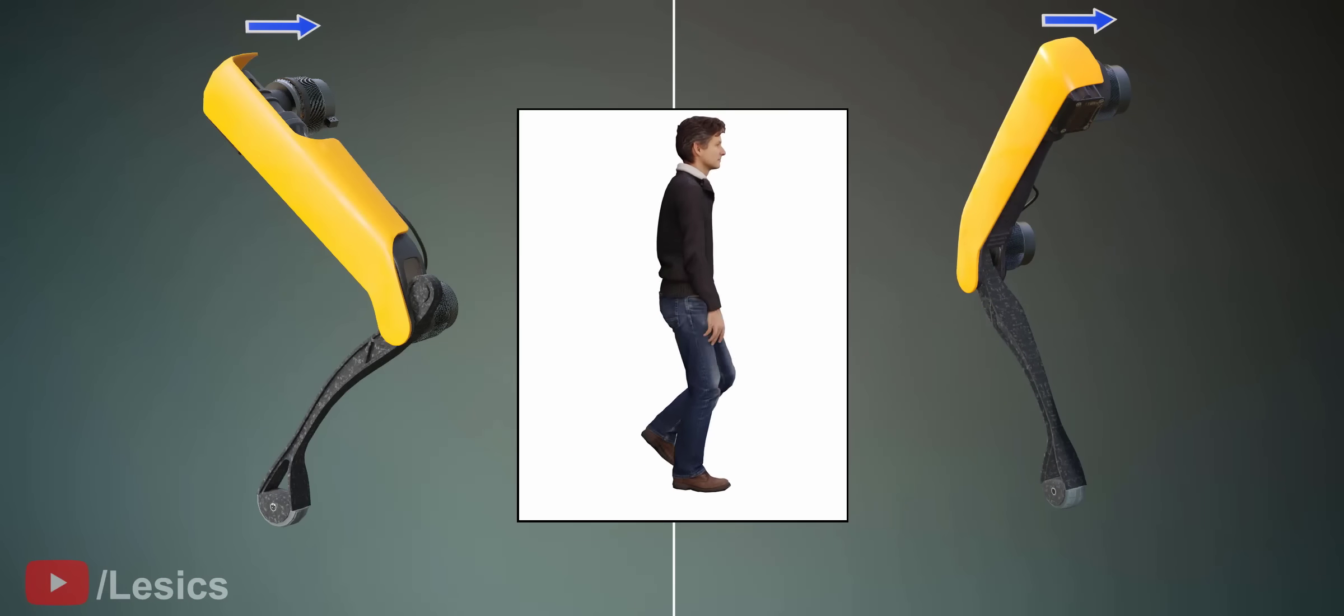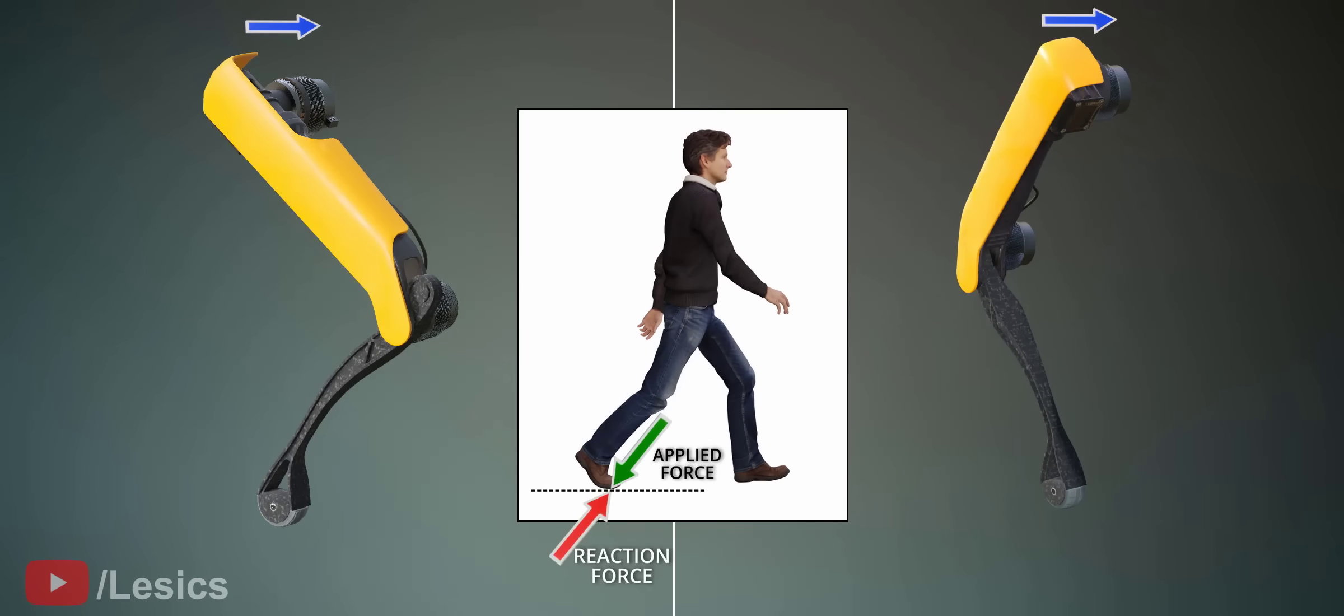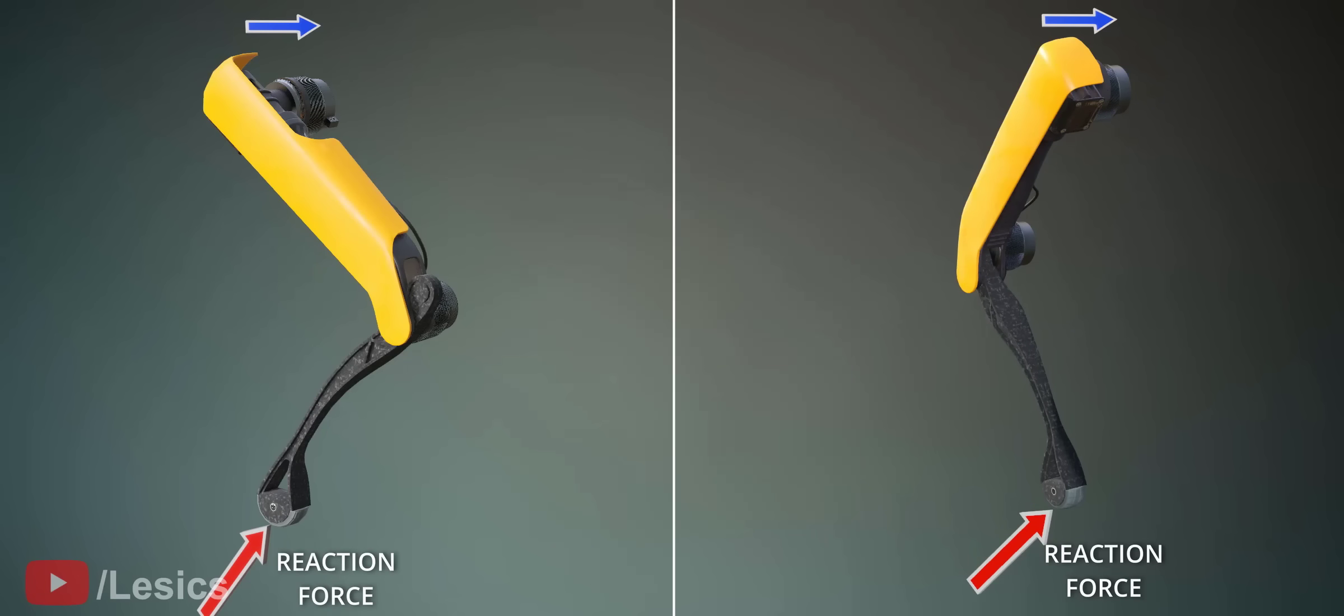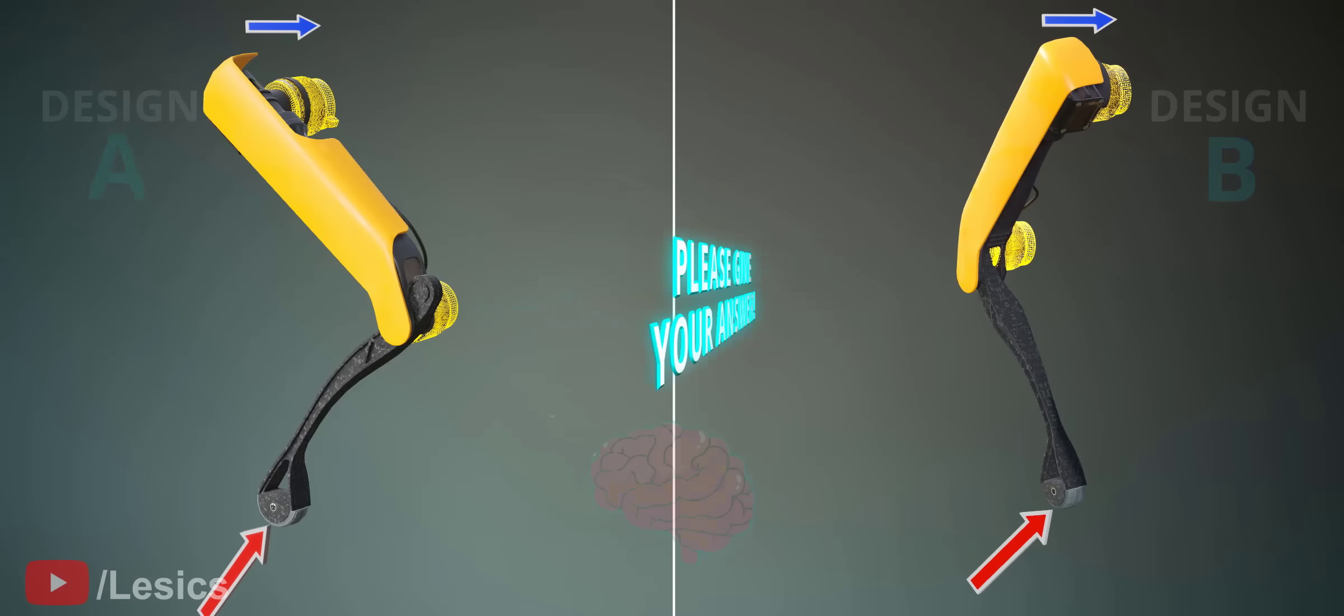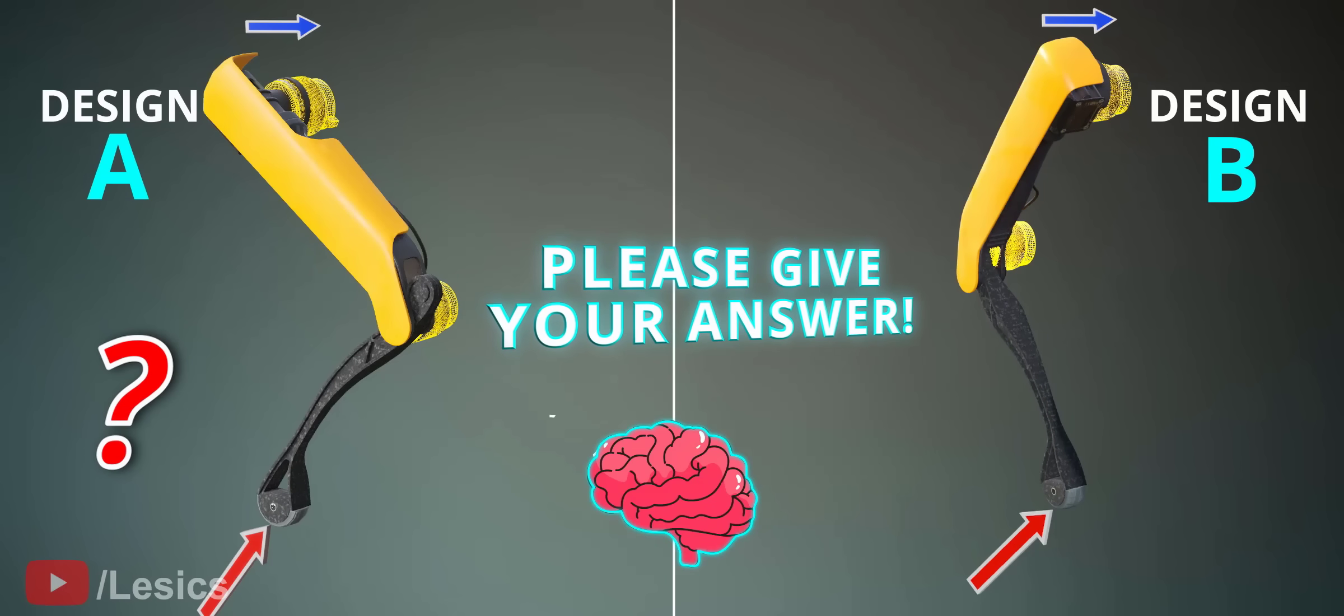We are able to walk because our legs drive a reaction force from the ground. The same is the case with the robot too. In a good robot design, both the motors should resist this reaction force or participate actively in robot motion. Which design has this quality?